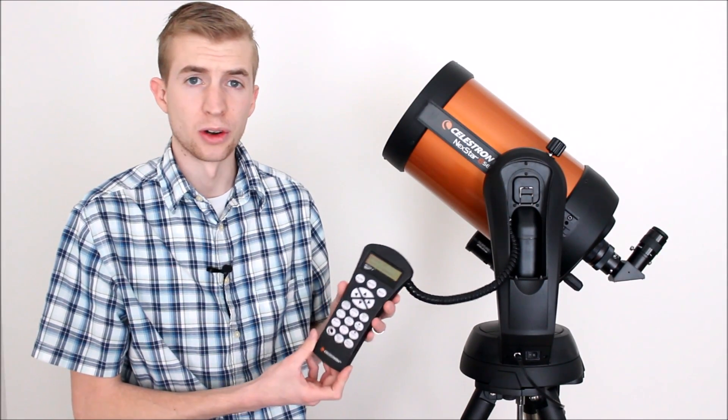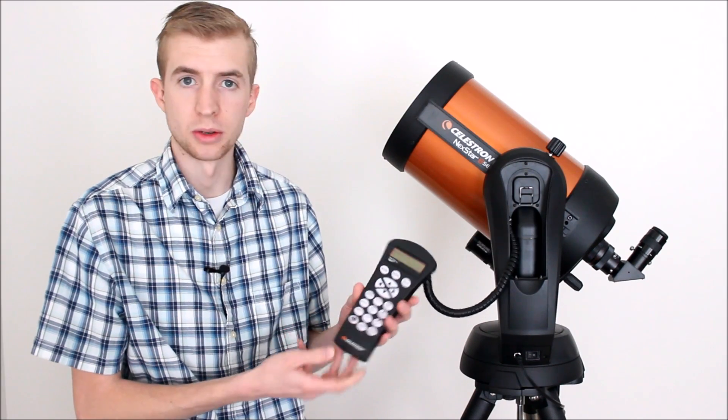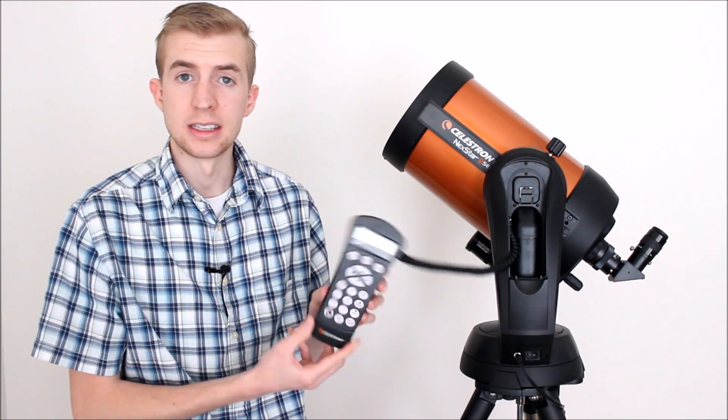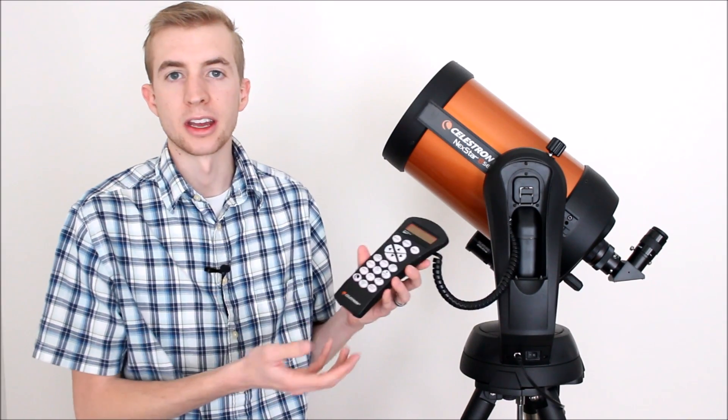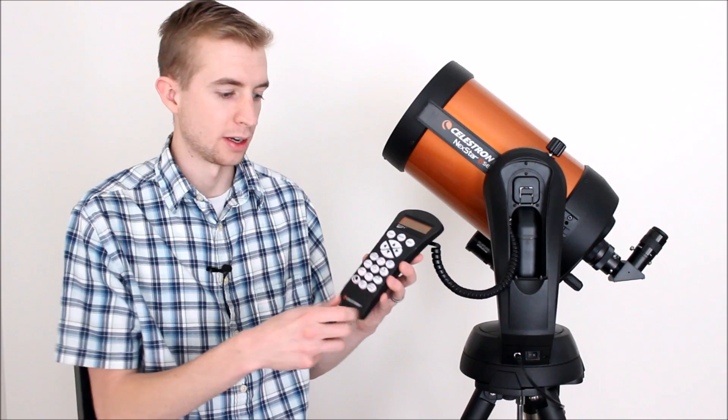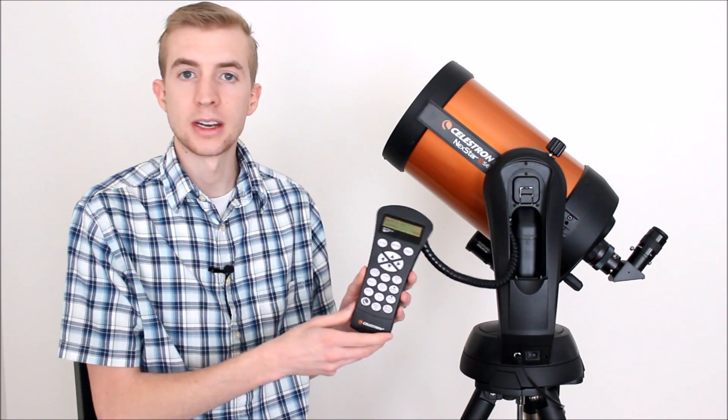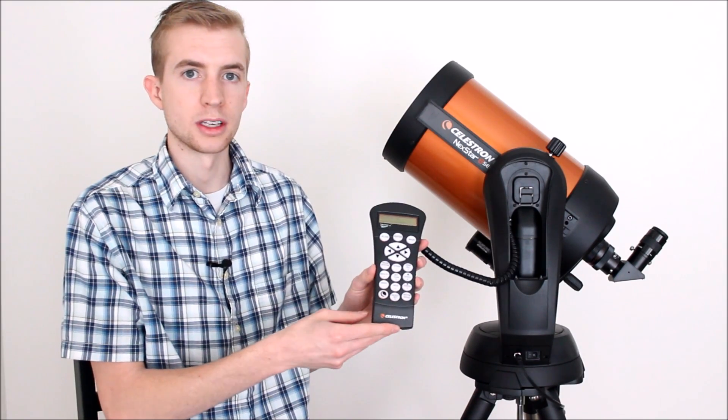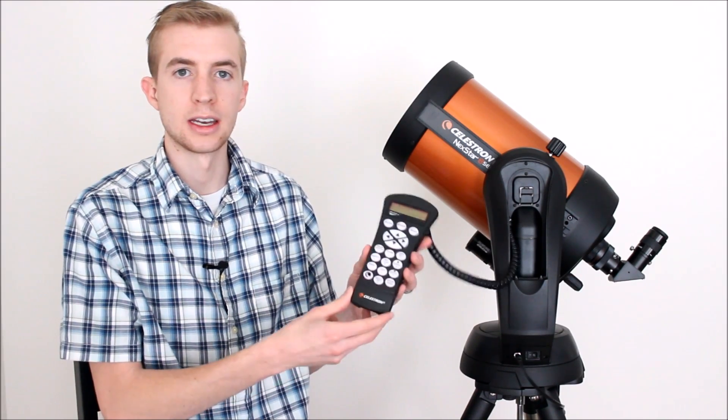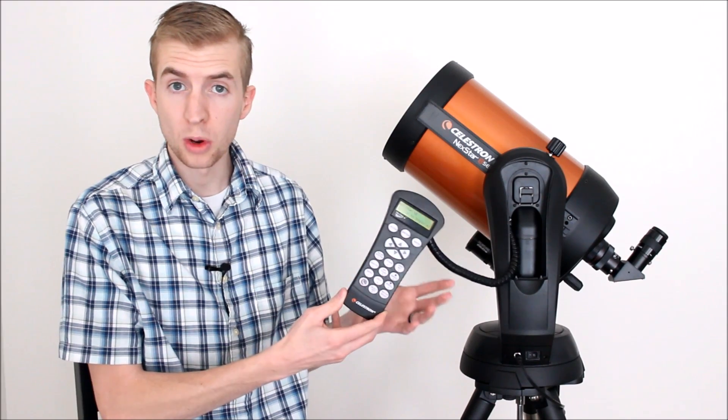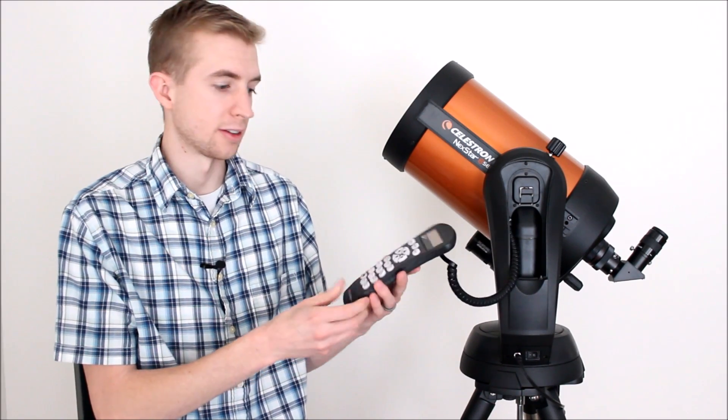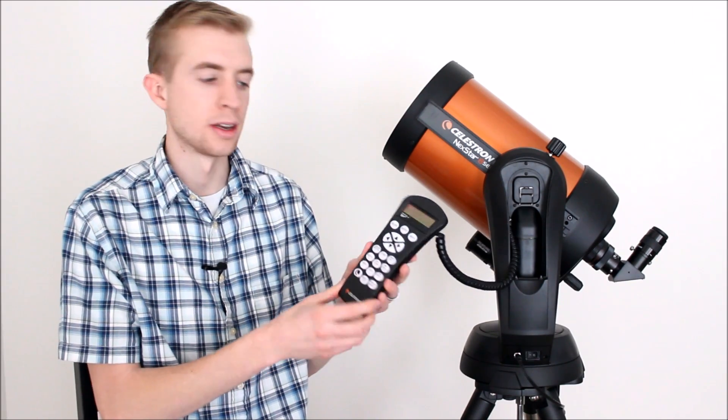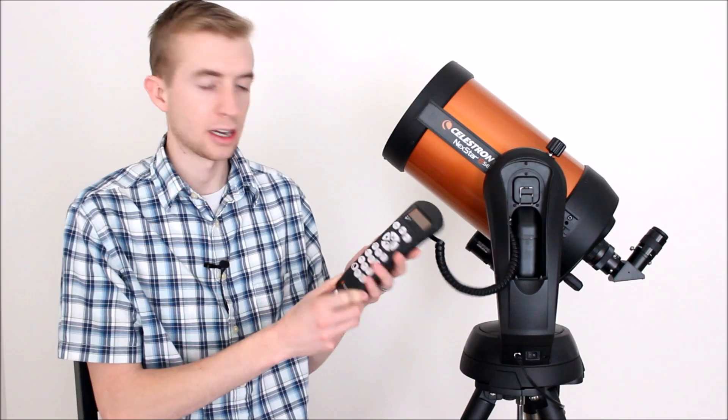The Nexstar Plus hand controller has been Celestron's go-to hand controller for quite some time now, and it's actually been nice that they made these flash upgradeable. It's been nice over the years not to have to buy a new one - to just be able to stick your RS-232 cable in here, connect it to the Celestron firmware manager, update it, and you're good to go with the latest updates for your telescope.